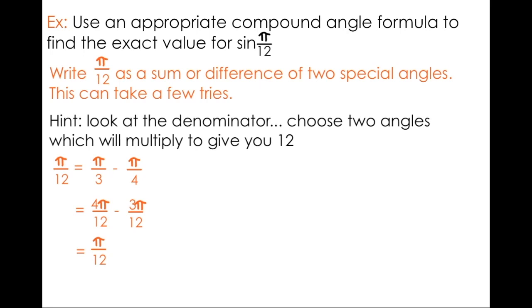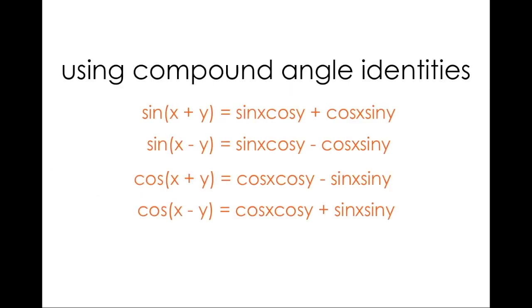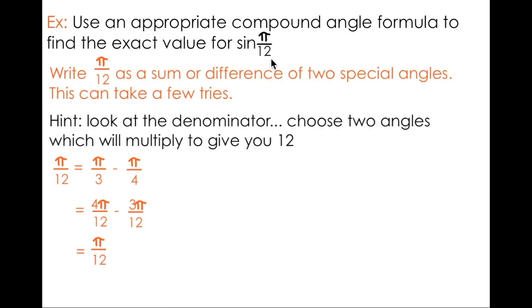Now that we know which two angles subtract to give us pi over 12, it's time to select the appropriate compound angle identity. Looking at the list of identities, it's clear that we need to use sine of x minus y. This is because we're looking for the sine of pi over 12, and we just determined two angles which subtract to give us pi over 12.